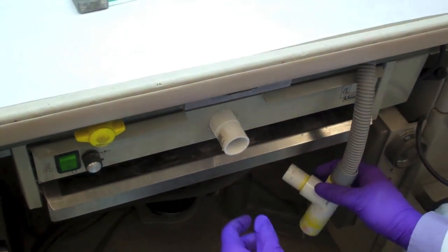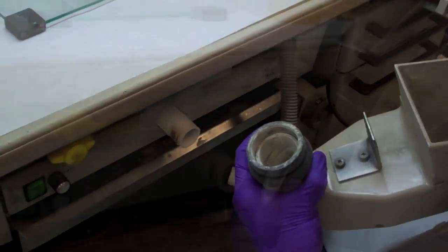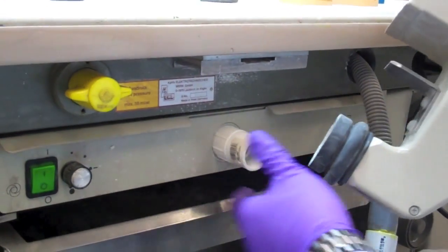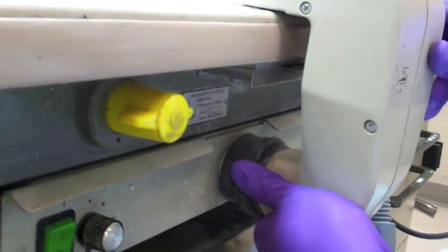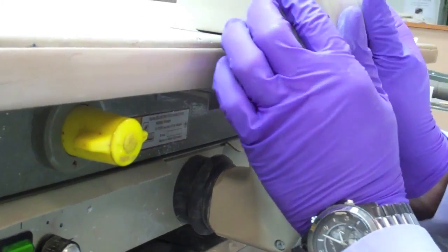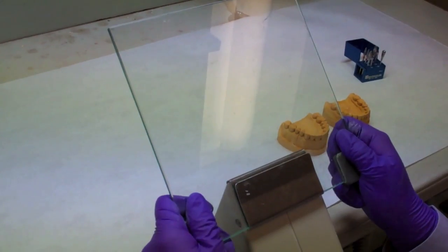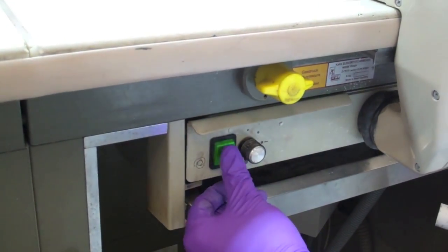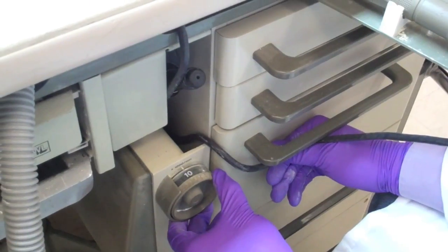Next we will insert the vacuum attachment. Make sure the metal insert is aligned with the slot underneath the bench. Secure it firmly. Place the glass shield on the attachment. The following are controls to adjust the vacuum. This dial controls the speed for the K9 unit.